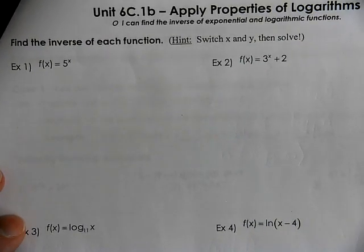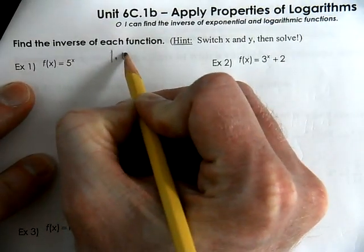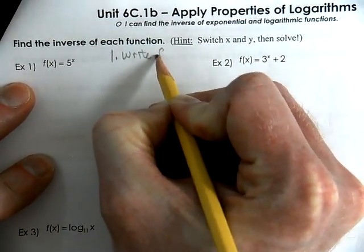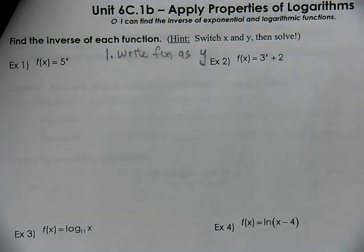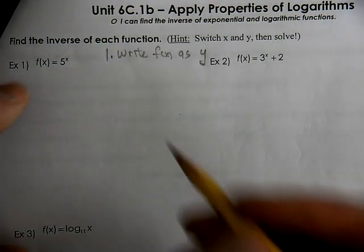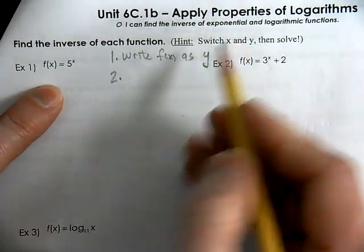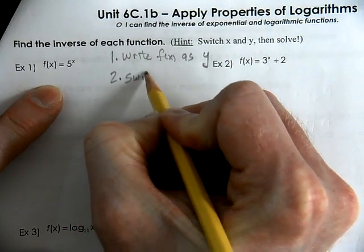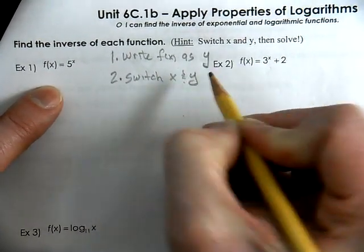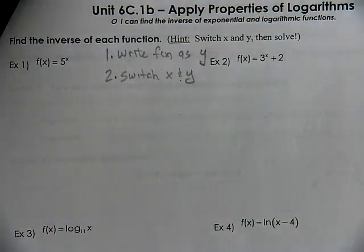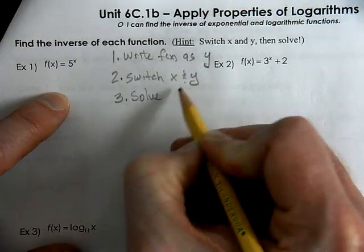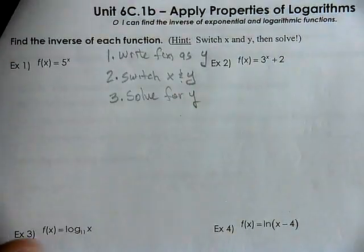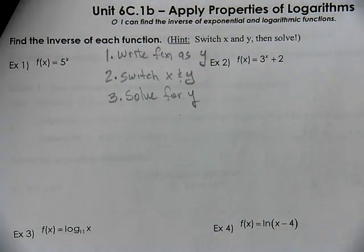There are three main steps that we do with these. Number one, write f(x) as y — that's the first thing we do. If it's written as f(x), we just write that as a y. Then you switch the x and the y in the equation. And the third step: solve for this new location of y. You want to get y by itself, and by doing that, you're going to create what's considered the inverse.